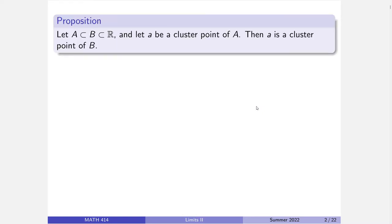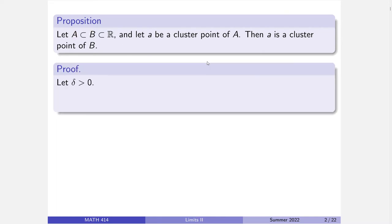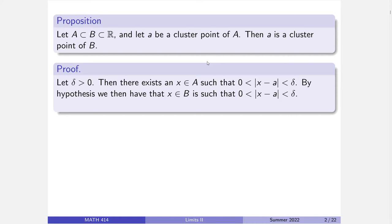To set up limits coming from the left or the right, let's take a moment and prove a fact about cluster points. If A is a subset of B, which is a subset of the real line, and A is a cluster point for the smaller set, then A is a cluster point for the larger one. Given a delta, there is an x in A, so it's in B, and there you go — it's a cluster point for B. Simple as that.